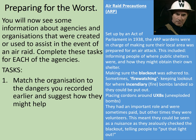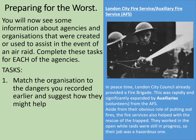In terms of the dangers, the ARP people were very good at dealing with unexploded bombs and fire watching, but also reassuring people and trying to lower that sense of panic and fear. The next organisation: the London City Fire Service, or the Auxiliary Fire Service which came later. In peacetime, London City Council already provided a fire brigade, which was rapidly and significantly expanded by the auxiliaries of the AFS. Aside from their obvious role of putting out fires, the fire services also helped with the rescue of the trapped. They worked while raids were still in progress, so their job was a hazardous one.